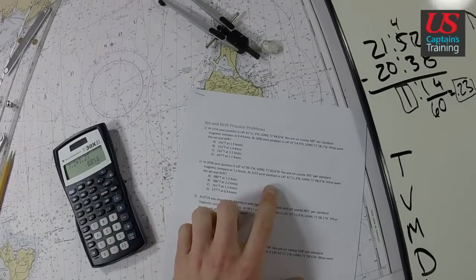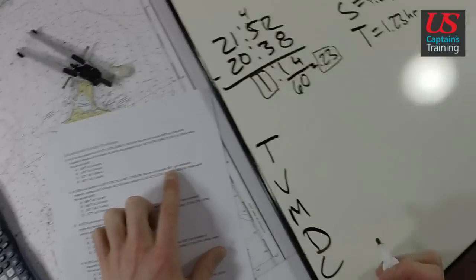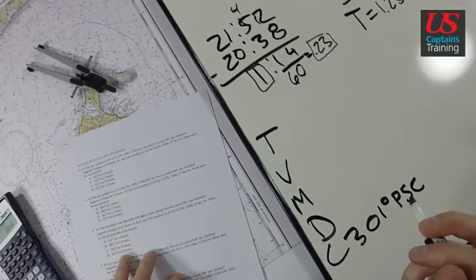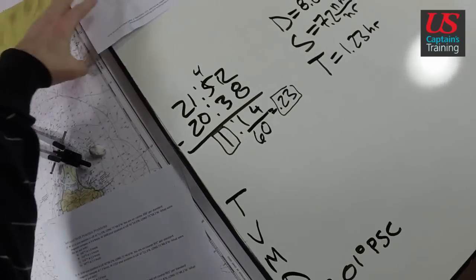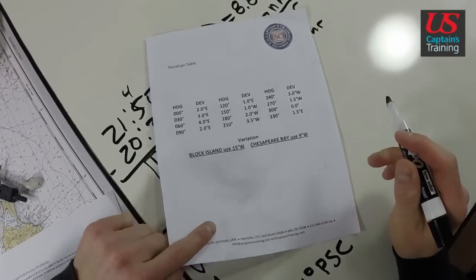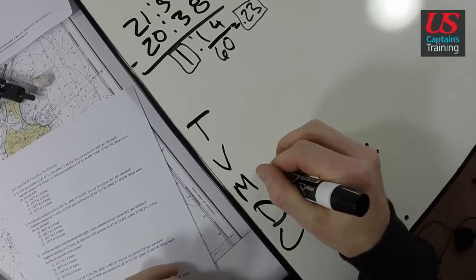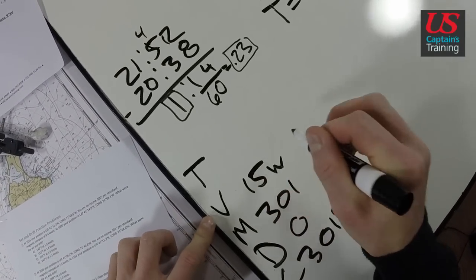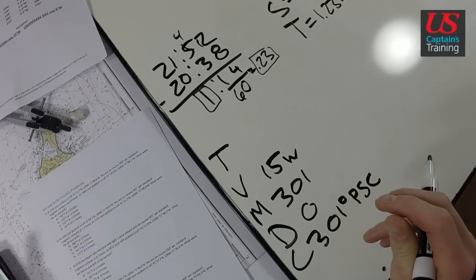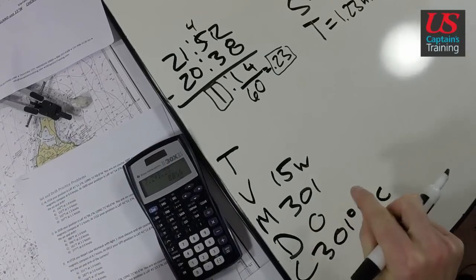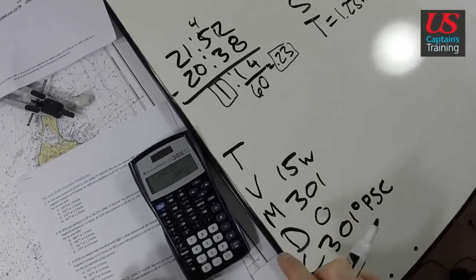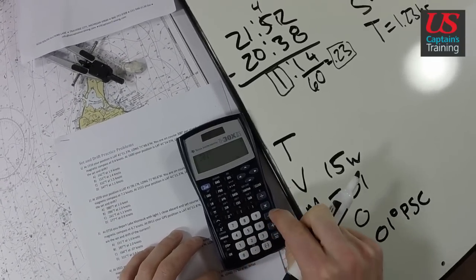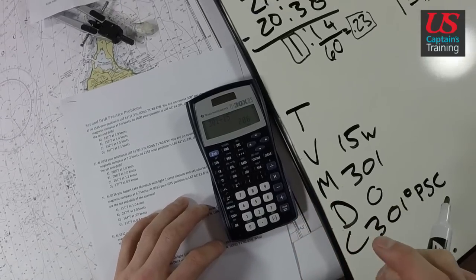And our course from problem 2 was 301, 301 degrees PSC. From the table, 300 is 0, so 301, 0 also. 301. Variation, 15 west on this Block Island chart. 301 minus 15 is going to be 296. Let me make sure. 301 minus 15 equals.